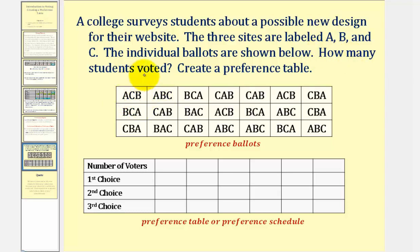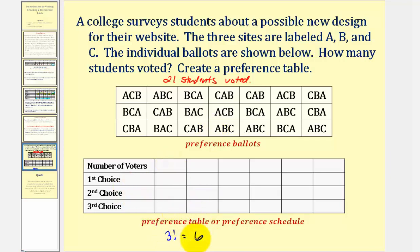We're first asked how many students voted. Well, notice how we have three rows of seven. From these ballots, we can create a preference table where we'll list the choices from first through third, then the number of voters in the first row that voted for each order. And since there are three choices, there are a total of three factorial, or six possible orders of preference. We can also use the counting principle and say there are three options for the first choice, two options for the second choice, and one option for the third choice, giving us a total of six different orders for the choices.